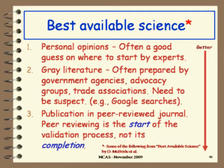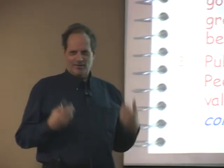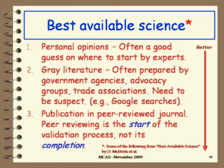Then he has what is called gray literature — those are the reports you'll see a lot on the web, prepared by government agencies, advocacy groups, trade associations. You need to be suspect, because there's no vetting of the technique; it's just a report someone wrote. It may be very good, it may be very bad, but there's no quality control on it. Google searches I'd often put in that category — you search a topic on Google, you get thousands of hits. How do you know what you're hitting? Schools should be teaching this now: how do you use Google effectively and vet the site you're looking at? And then publication in peer-reviewed journals is considered the gold standard. But peer-reviewing is the start of the validation process, not its completion.